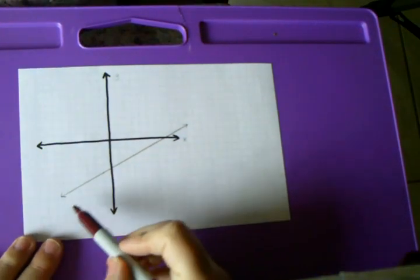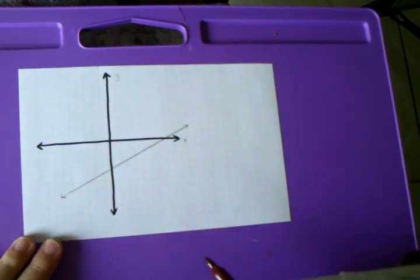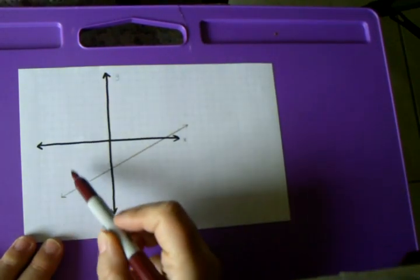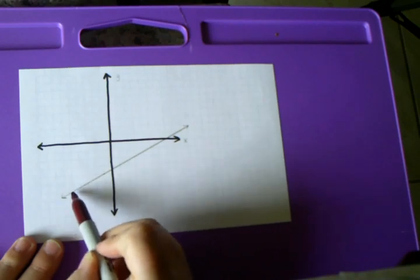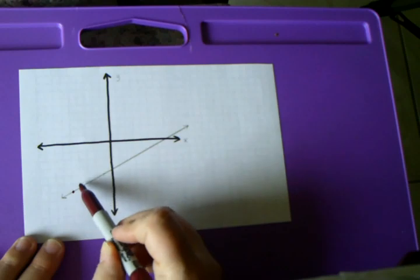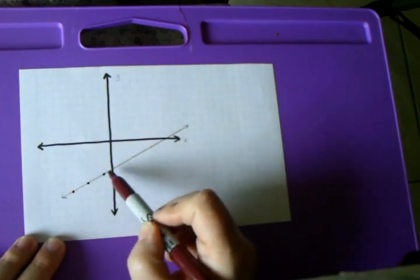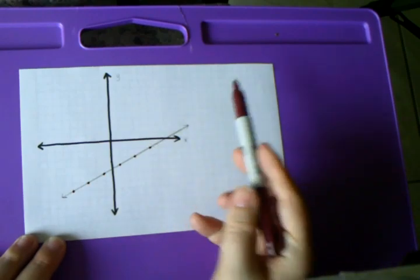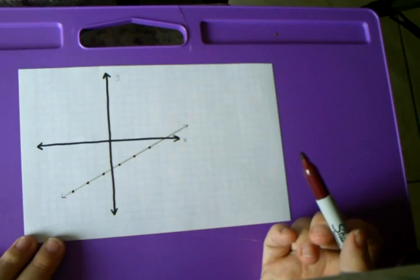Sometimes we're given lines that don't have points already identified on them, so we have to look at the graph and find them. On this graph I don't have any points on this line, but I can look and see where my points are — I look for where the line goes through directly the center of a grid intersection. Once I have two points, I really don't need to continue.